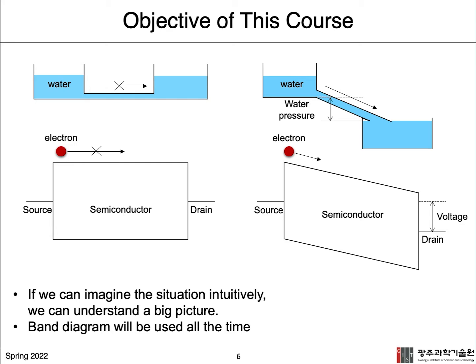So this is a simple example of the way we will learn the semiconductor device in this course. If you can imagine the situation of equilibrium and non-equilibrium of source-semiconductor-drain, you can understand a big picture. For example, an equilibrium of source-semiconductor-drain is like water in two bottles with no water pressure, so water cannot move anywhere.